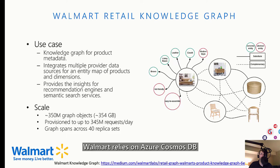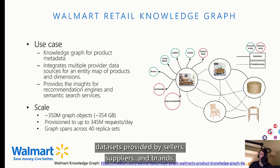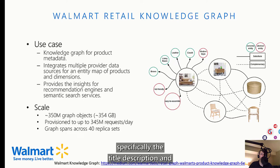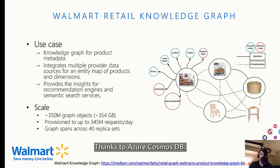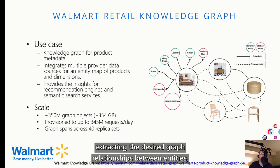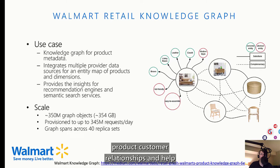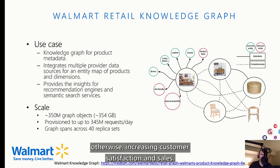Another customer is Walmart. Walmart relies on Azure Cosmos DB for a number of high-value services. Walmart builds an eCommerce catalog out of data provided by sellers, suppliers, and brands. They wanted to extract additional information from metadata — specifically the title description and images that tag along with the data itself. Thanks to Azure Cosmos DB, Walmart realized this idea as the Walmart Retail Knowledge Graph, using Cosmos DB's Gremlin Graph API. After building a Hadoop data processing pipeline and extracting graph relationships between entities, Walmart persisted that information to Cosmos using bulk ingestion APIs, enabling better product-customer relationships and helping customers find products they might not have known about.